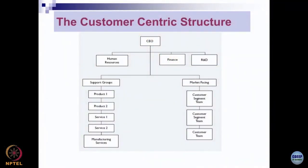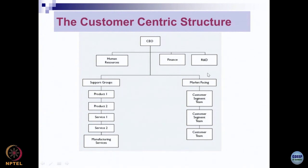Now we will look at the next structure, which we call the customer-centric structure. They may sound similar, but the process-based structure is different from the customer-centric structure. In this structure, the CEO is reported to by one market-facing group and another support group, along with finance, R&D, and human resources. A significant portion of the organization is customer-facing, responsible for serving specific customer segments, while another group is responsible for different products and services. Functions like HR, finance, and R&D exist at the corporate level.